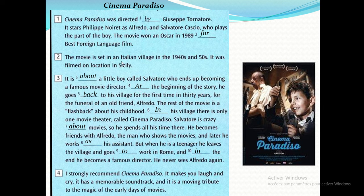'The movie is set in an Italian village in the 1940s and 50s. It was filmed on location in Sicily. It is about a little boy called Salvatore who ends up becoming a famous movie director. At the beginning of the story, he goes back to his village for the first time in 30 years for the funeral of an old friend, Alfredo. The rest of the movie is a flashback about his childhood in the village.'